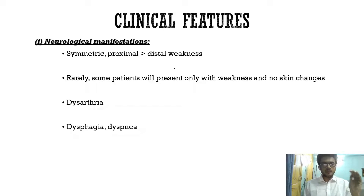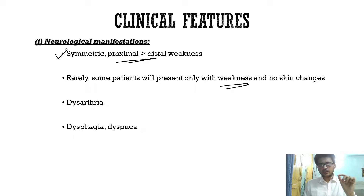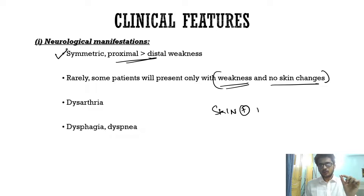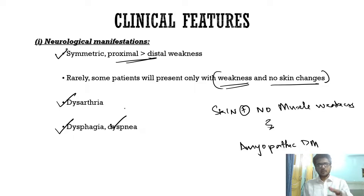Coming to the clinical features, we'll split these into neurological and dermatological manifestations. Since it is a myopathy, you're going to have symmetric proximal more than distal weakness. Rarely, some patients will have only weakness without any skin changes. When a patient has only skin changes with no muscle weakness, it is known as amyopathic dermatomyositis. Dysarthria, dysphagia, and dyspnea can occur if there is respiratory muscle involvement.